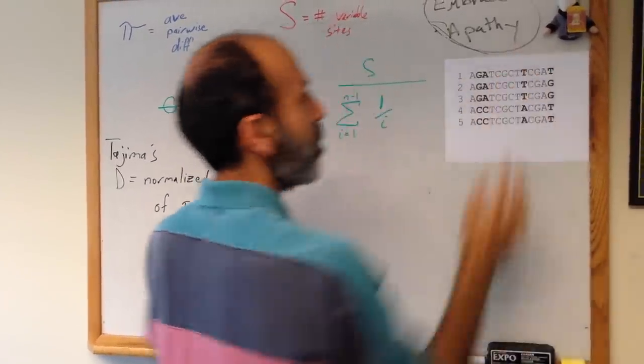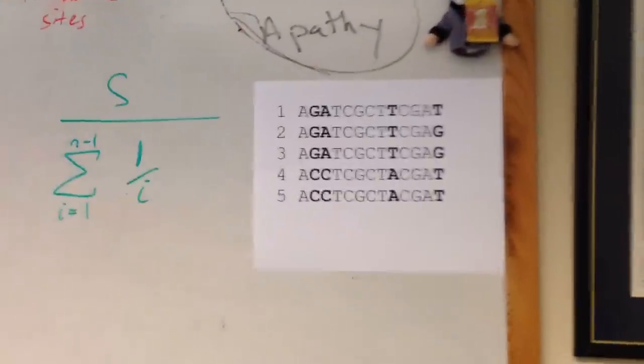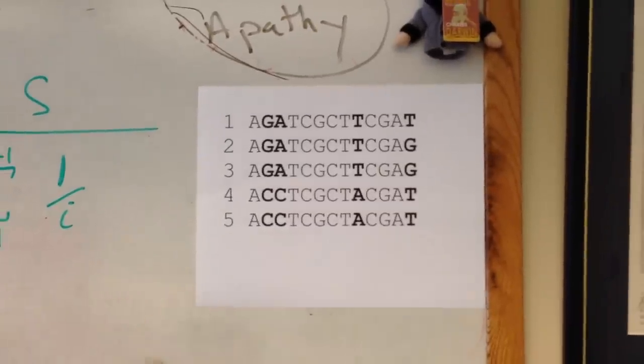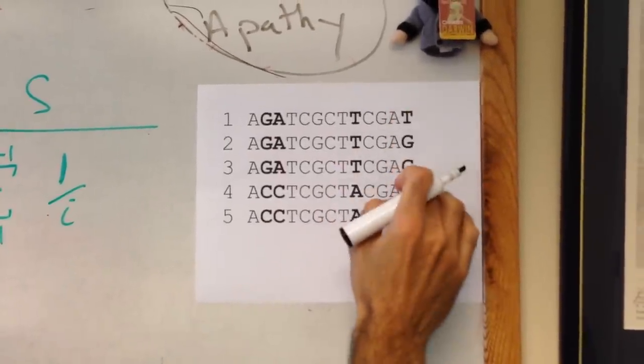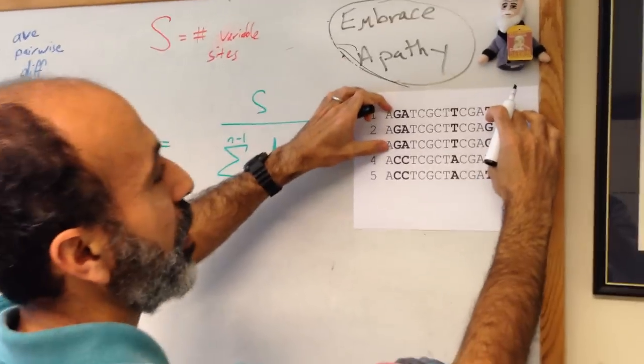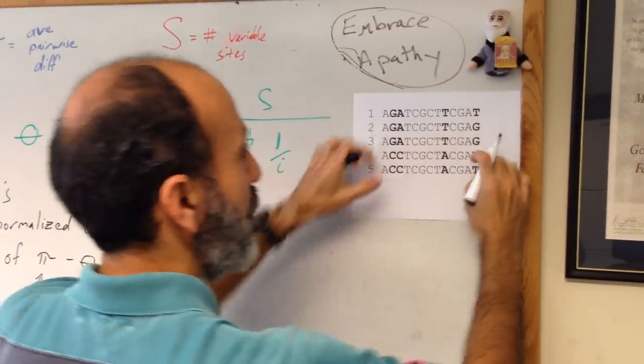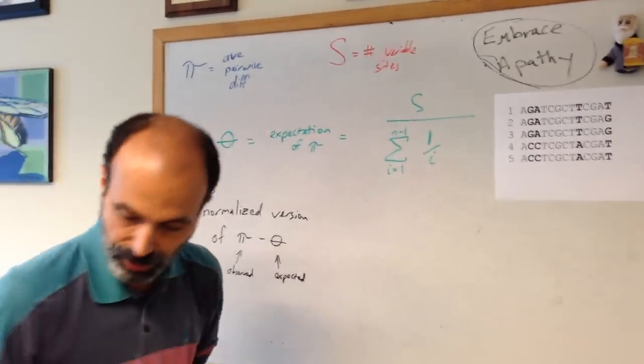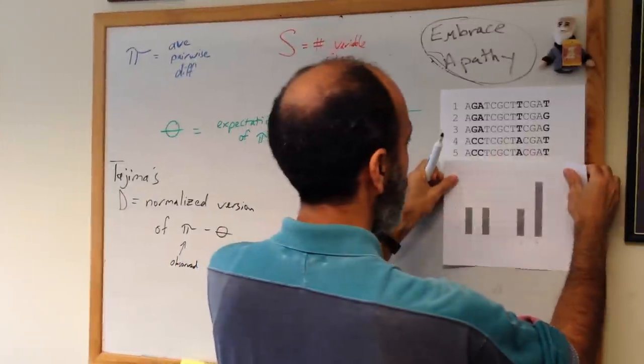Now let's imagine a case instead like this. In this case, you have two common haplotypes. Here individuals 1, 2, and 3 are very similar. One differs from the other two but just by one. But you have this set that are closely related and you have this other set that are closely related but they're very different from each other.